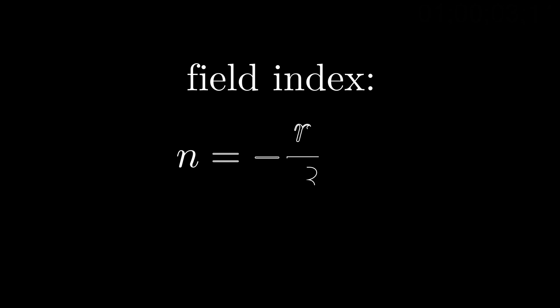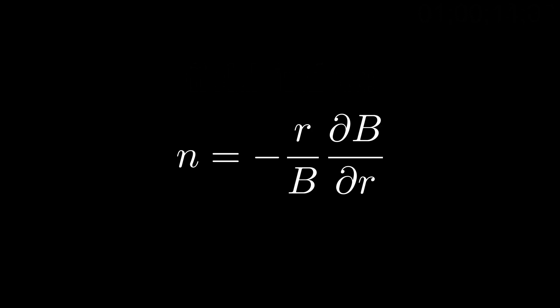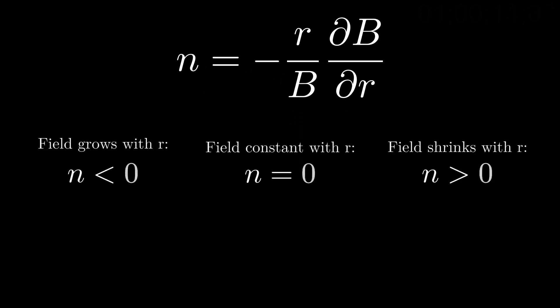What are the stability limits of weak focusing? We define a unitless quantity known as the field index, written as n, which describes a field's focusing ability. n is defined as negative r over B times dB/dr, and n can have three regimes: n less than zero means the field increases with radius; n equals zero means the field is uniform; or n greater than zero means the field is decreasing with radius.